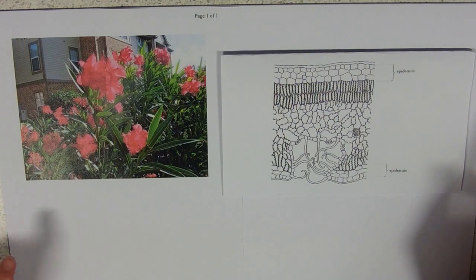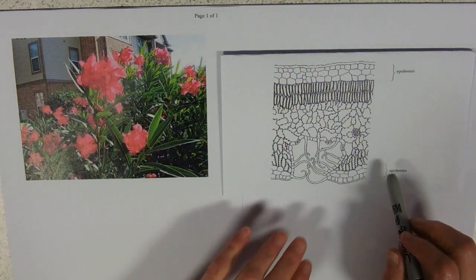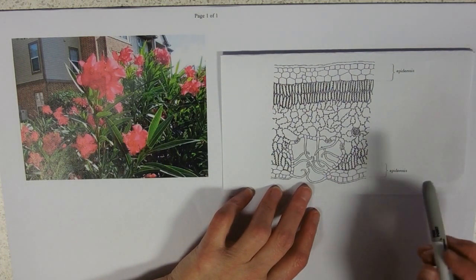And I'll just point out at this point that oleander is really, really toxic. Don't eat it, don't even be tempted. That doesn't look very tasty anyway, does it? So if we follow the lower epidermis round, again, the lower epidermis is really quite thick, which is where we expect to find the stomata.